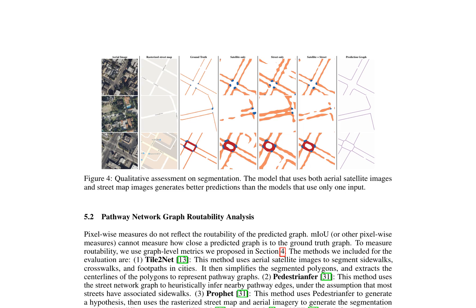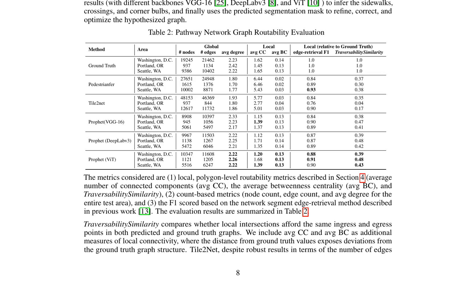The implementation involves partitioning the test area into tessellating intersection polygons (TIPs), enabling efficient computation of local connectivity metrics. Experiments show that using both aerial satellite images and street map images improves segmentation performance, particularly in removing spurious predictions and recovering occluded sidewalks. The evaluation results are summarized in Table 2, demonstrating the importance of using graph-level metrics in evaluating pedestrian graph prediction models.